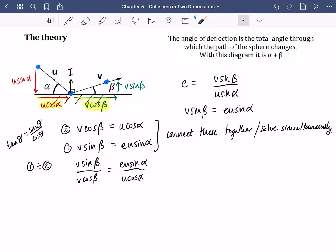Notice it's this divided by this and this divided by this. Now you should spot some things happening here. V's will cancel. U's will cancel. Sine beta divided by cos beta is tan beta. And we have sin alpha divided by cos alpha. Which is tan alpha. And we have e at the beginning. And we know some things about e.